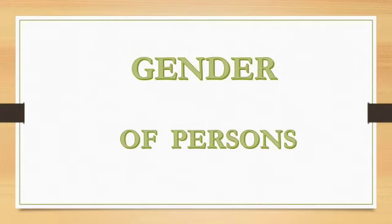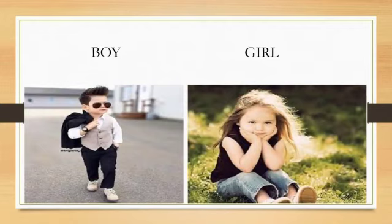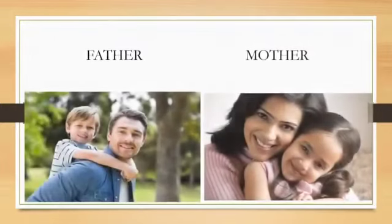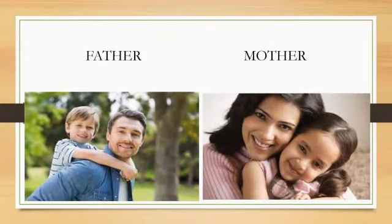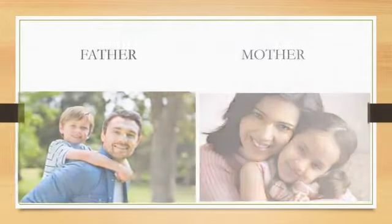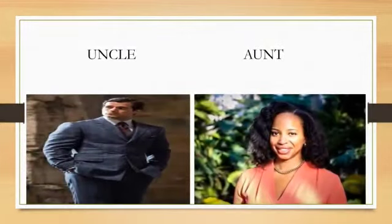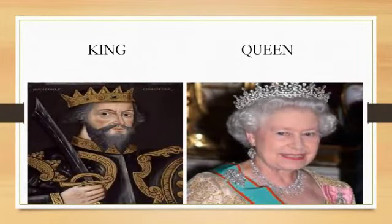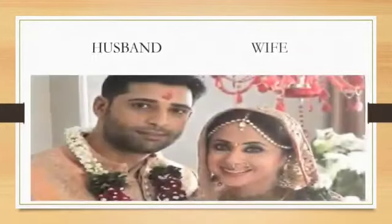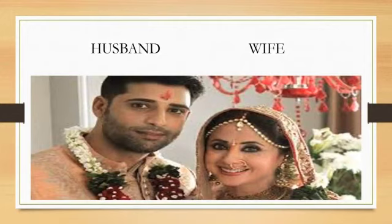Now we will see the images of gender of persons. Boy — Girl. Father — Mother. Uncle — Aunt. King — Queen. Husband — Wife.